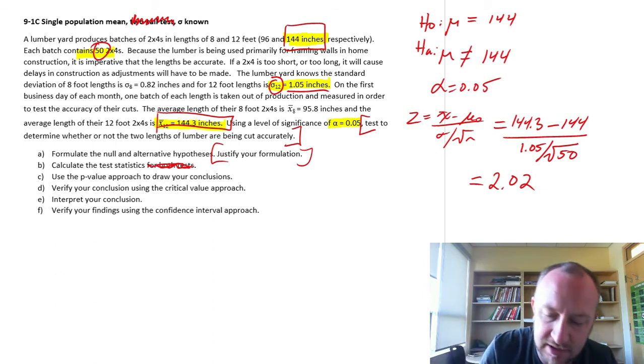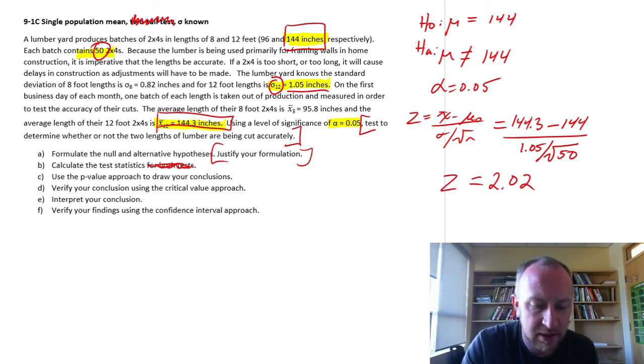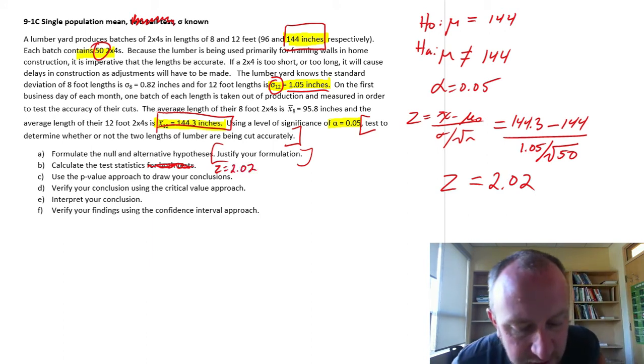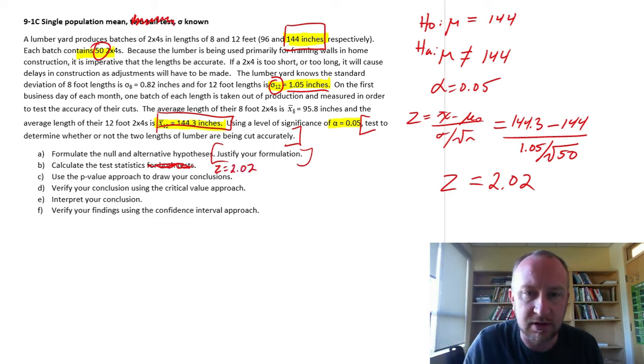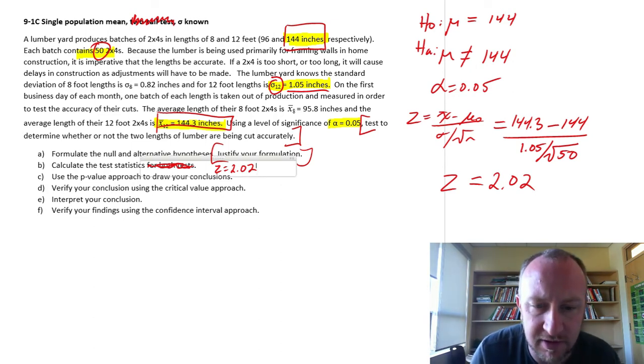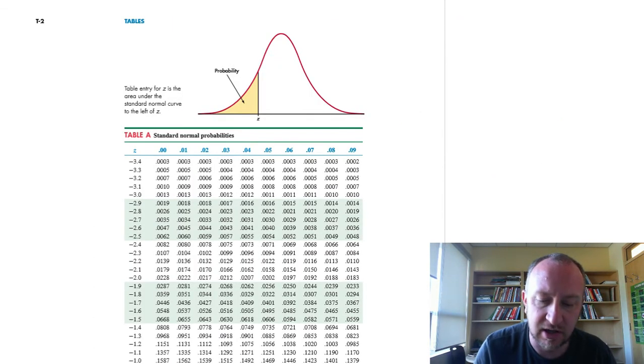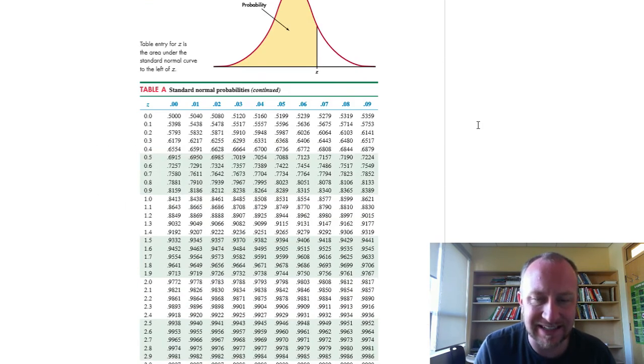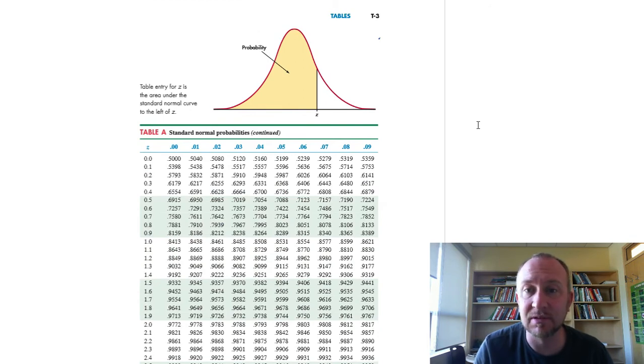Let's scribble that in here. Use the p-value approach to draw your conclusion. We go to our Z tables and we want to find our test statistic on the Z table. This one can be a little bit tricky because of how the table is designed.